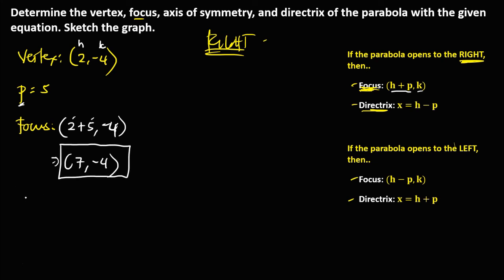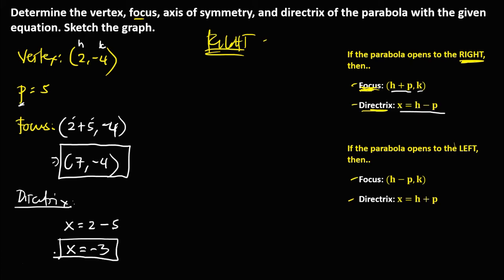For the directrix, since the parabola opens to the right, the directrix is x equals h minus p. So x equals 2 minus 5, therefore x equals negative 3. This is the equation of the directrix.